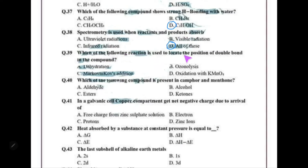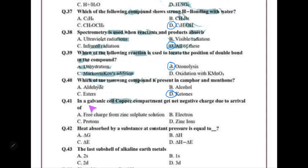Which reaction is used to locate the position of a double bond in a compound, especially in alkenes? Ozonolysis is the reaction used for locating the double bond. Which functional group is present in camphor and menthone? The ketone functional group is present in them.